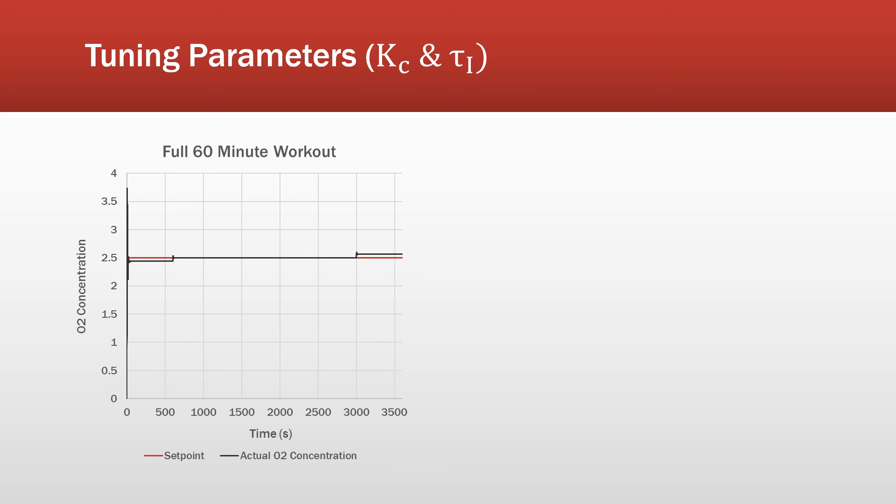Okay, so you can see the response of our controller here over the 60-minute workout. And because this is in deviation variable, zero is 95% O2 concentration. So as you can see, they're well within the healthy range for O2 concentration.